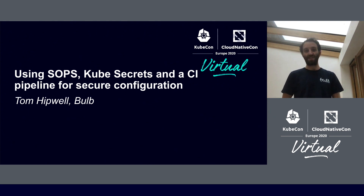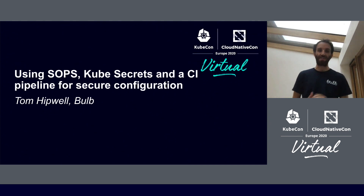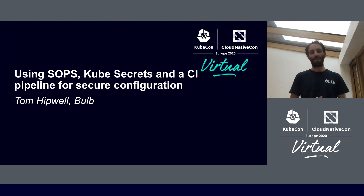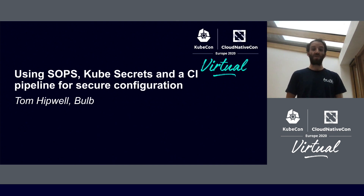That system uses a microservices architecture and each service is a Flask app that is Dockerized and deployed to Kubernetes. I'm here to talk today about a pattern we use at Bulb where we use SOPS, Kubernetes secrets and a CI pipeline for secure configuration deployment.